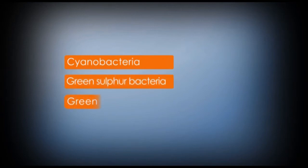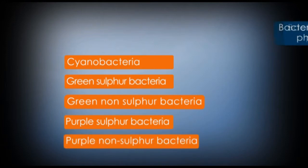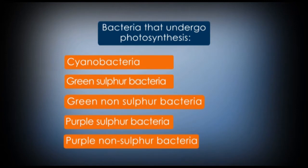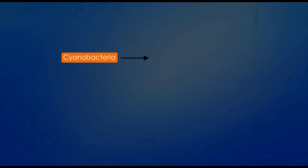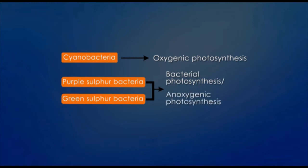Cyanobacteria, green sulfur bacteria, green non-sulfur bacteria, purple sulfur bacteria and purple non-sulfur bacteria are some of the bacteria that undergo photosynthesis. The cyanobacteria conduct photosynthesis similar to that in plants, called oxygenic photosynthesis. The purple and green bacteria conduct bacterial photosynthesis, or anoxygenic photosynthesis.